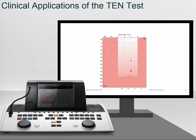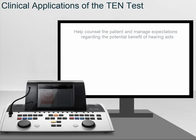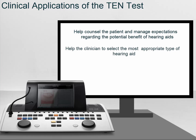By performing the TEN test and identifying dead regions, clinicians can save time and be guided in their clinical practice to provide the best outcomes for the patient. Firstly, it can be used to help counsel the patient and manage expectations regarding the potential benefits of hearing aids. Secondly, it can help the clinician select the most appropriate type of amplification.